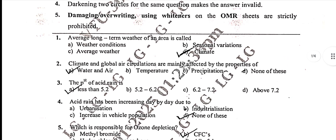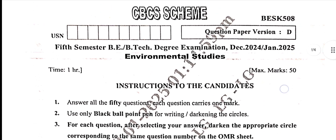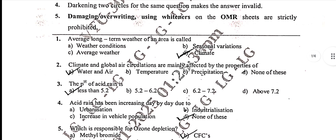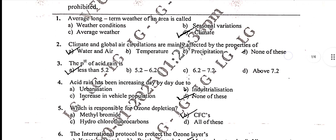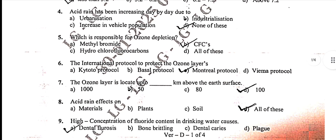Version code is AD. First question: average long-term weather of an area is called climate. Second question: the pH level of acid rain is less than 5.2. Fourth question: none of the above. Fifth one: CFC. Sixth one: Montreal Protocol.